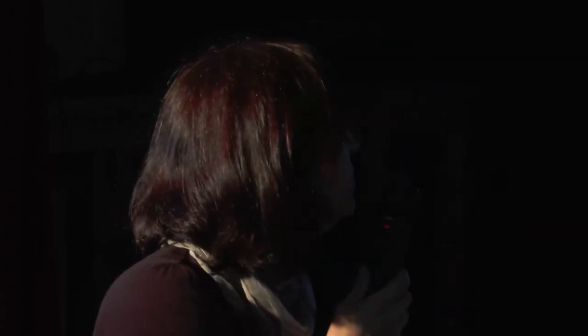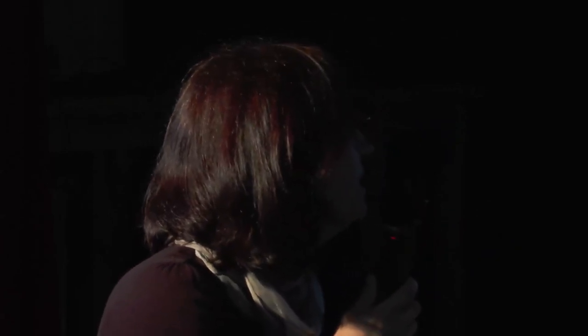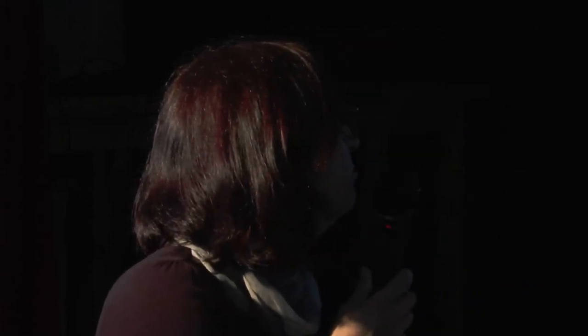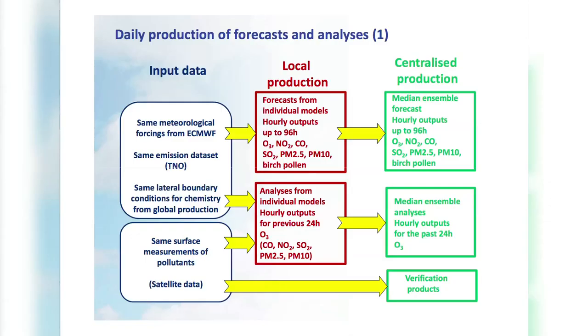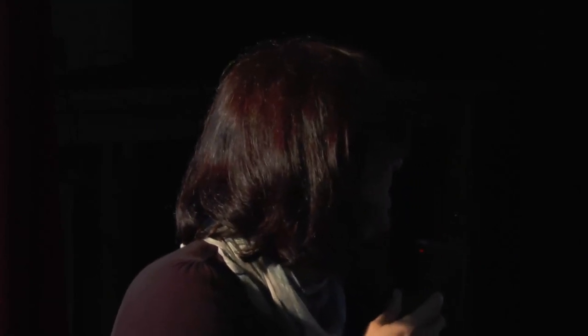Once each of the seven models is produced, all files are transferred to the centralized production location, which is Météo-France. There we read all models on the same grid and calculate the ensemble, which is based on a median approach. This gives a median ensemble for the forecast and a median ensemble for the analysis. Currently the ensemble is only for ozone, as we have enough models for ozone only, but this will be increasing in the future.